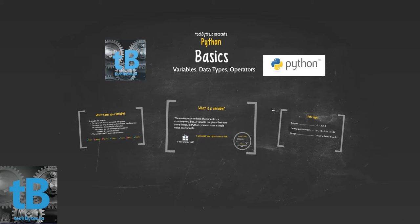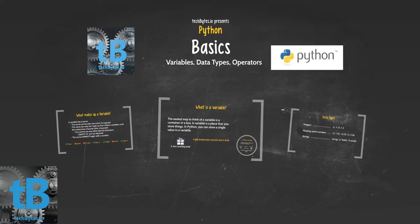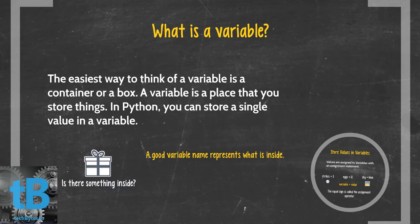Diving into Python basics, let's start with a variable. What is a variable? The easiest way to think of a variable is a container or a box. A variable is a place that you store things. In Python you can store a single value in a variable. A good variable name represents what is inside of it.